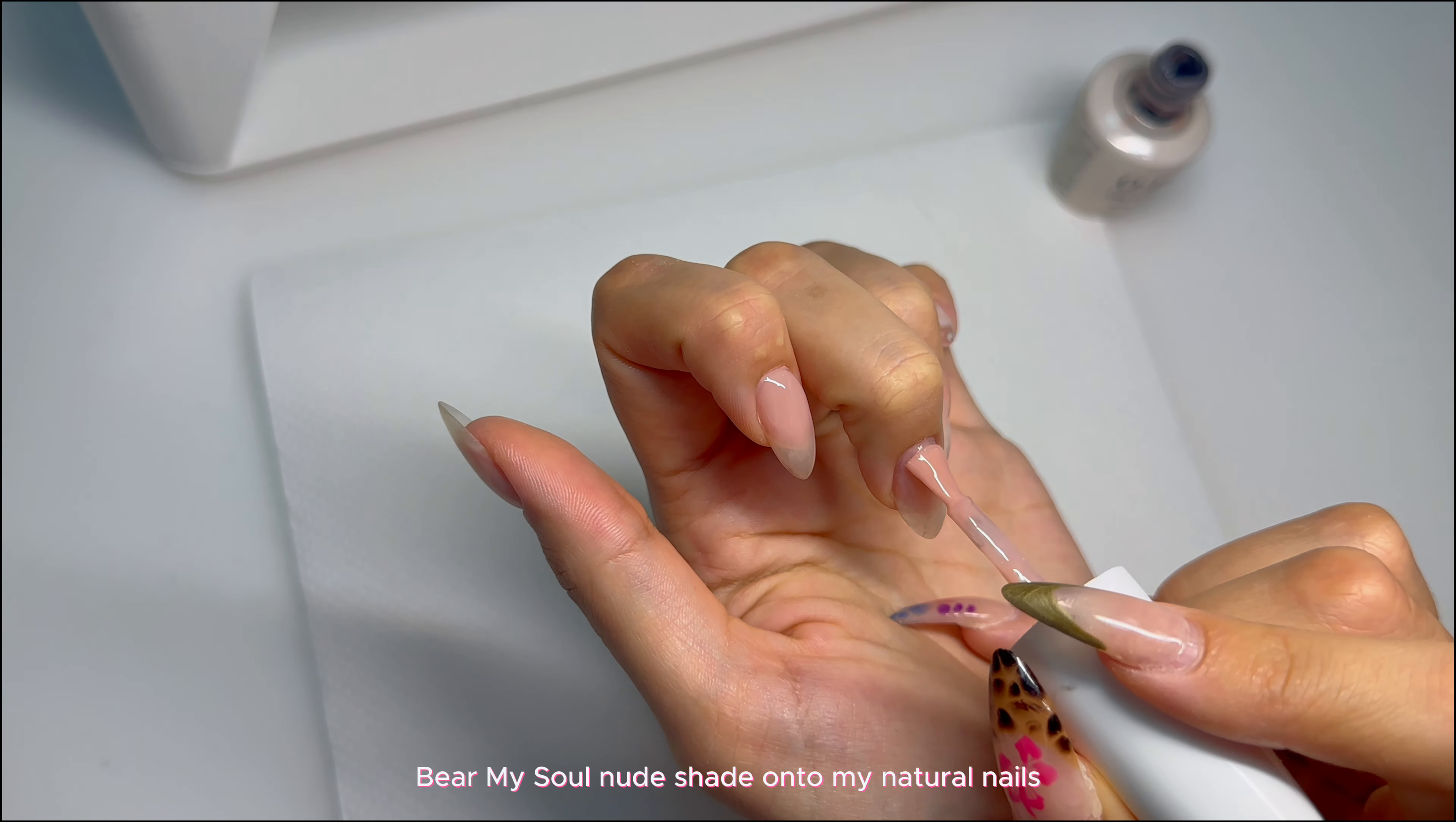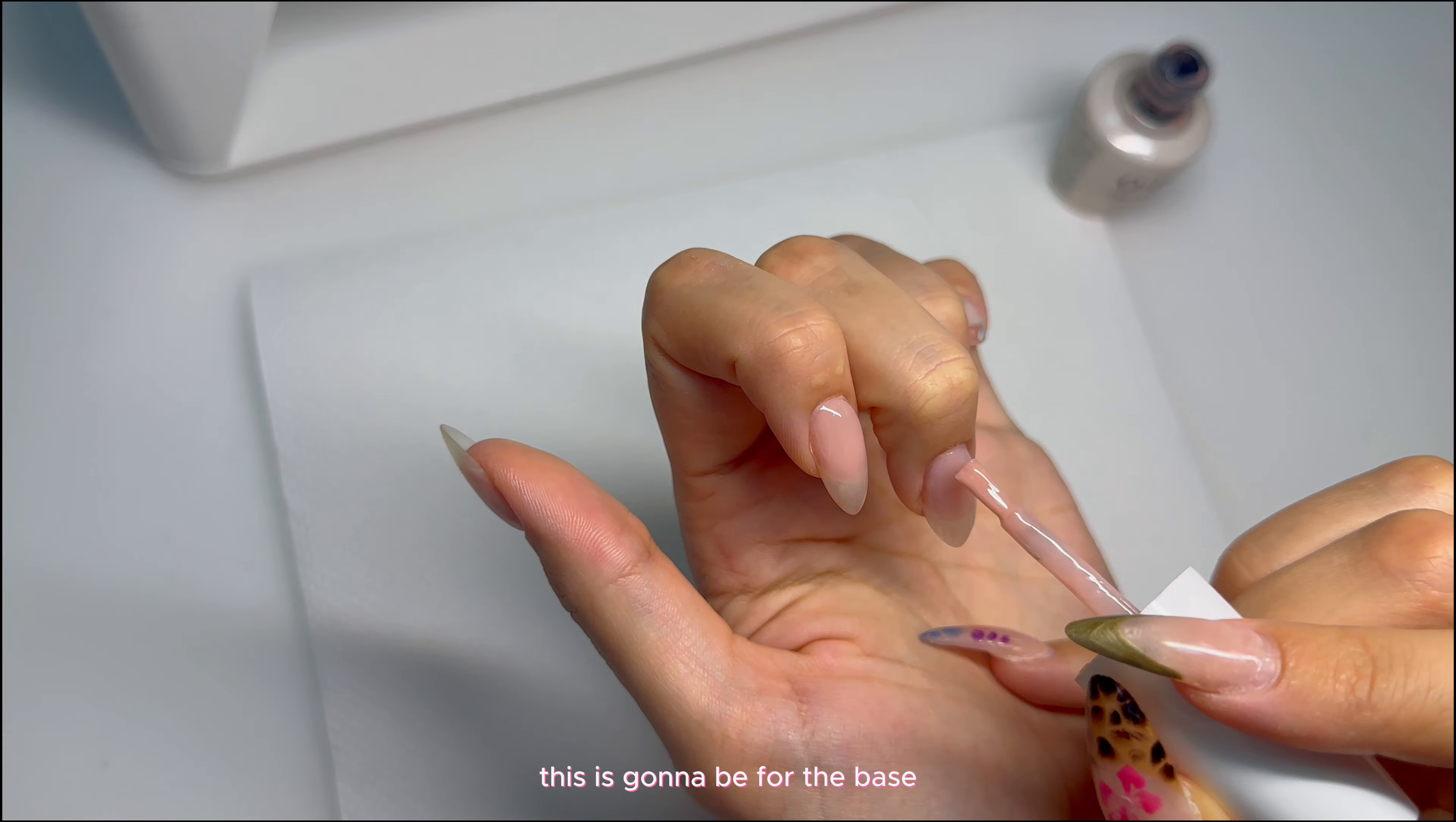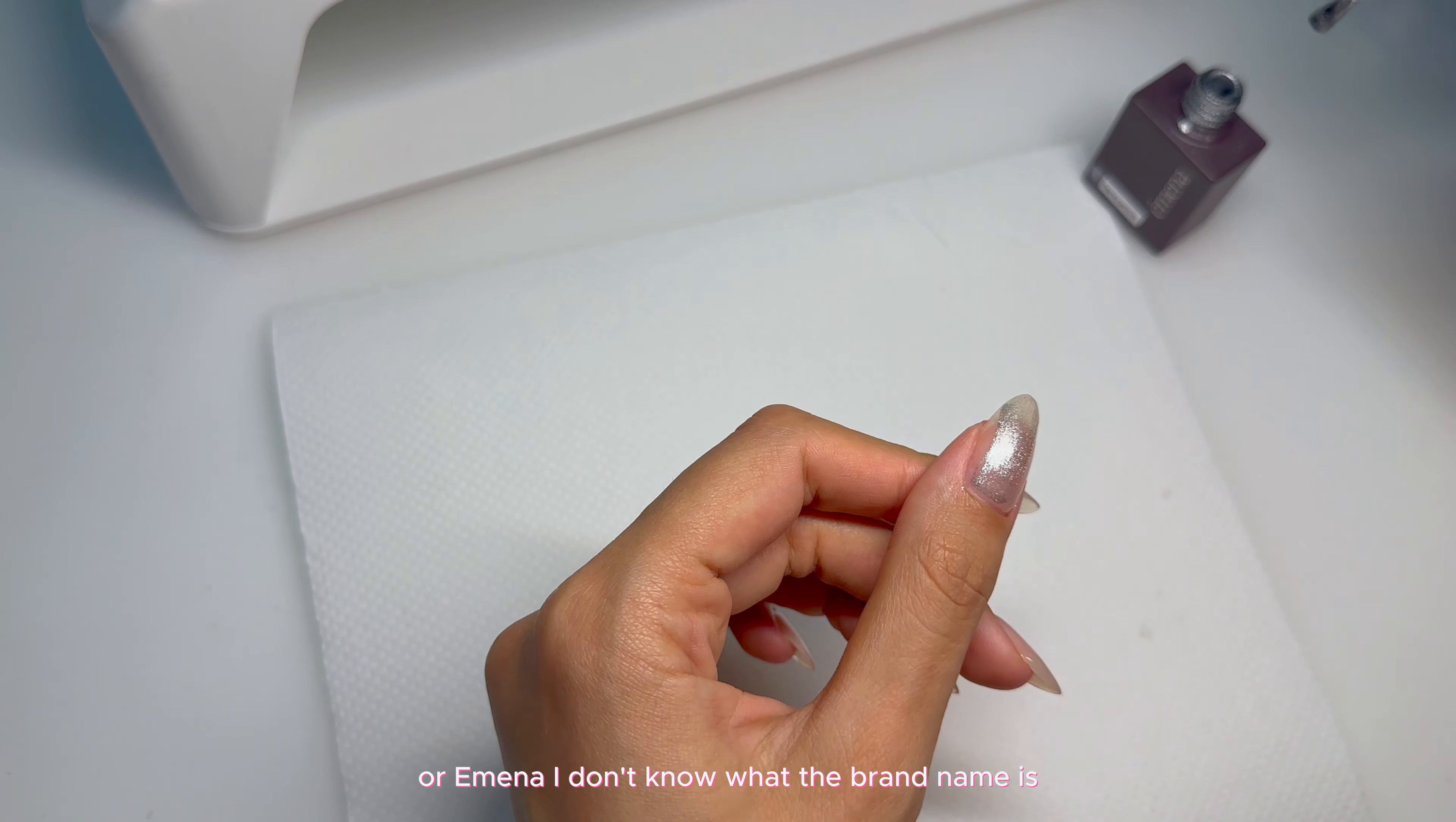Sorry, I was yapping for a minute there. So I kind of skipped a step on what is happening, but I am applying the OPI Bare My Soul Nude Shade onto my natural nails. All of them applied on all the nails. This is going to be for the base, and I only applied one layer of that.